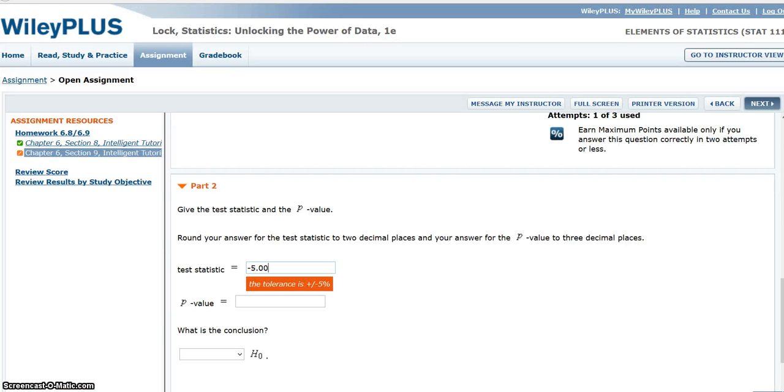Coming back into WileyPlus, it wants me to round to three decimal places. So, rounding to three decimal places, my P value would be 0.